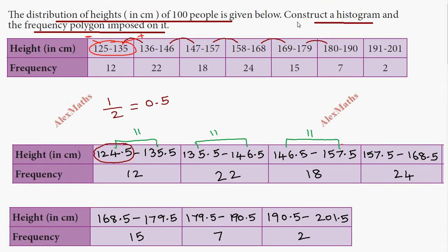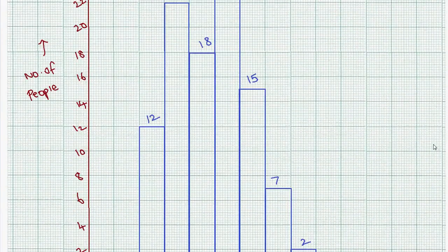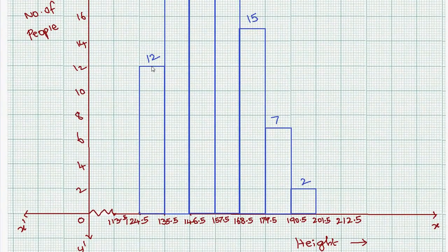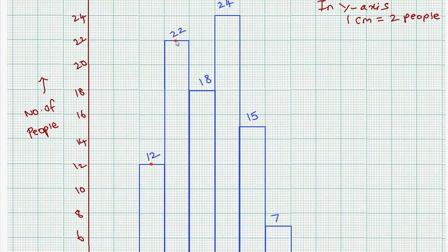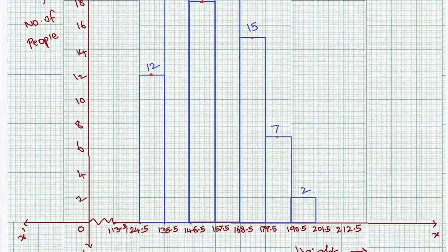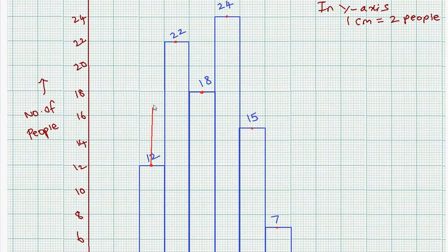The histogram is now complete. For the frequency polygon, we find the midpoint of each bar. The midpoints correspond to frequencies: 22, 18, 24, 15, 7, and 2. We join these midpoints with straight lines — first, second, third, fourth, fifth, and sixth parts — to form the frequency polygon imposed on the histogram.